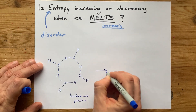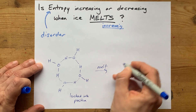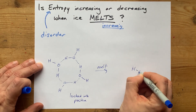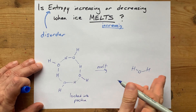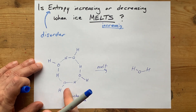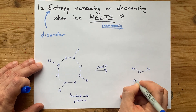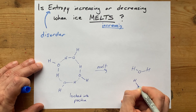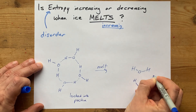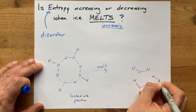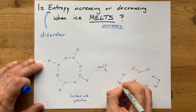When you're melting it, what you're actually doing is allowing some of those hydrogen bonds to release. You're not breaking all of the hydrogen bonds — you're just breaking up enough that these molecules can flow over top of each other.